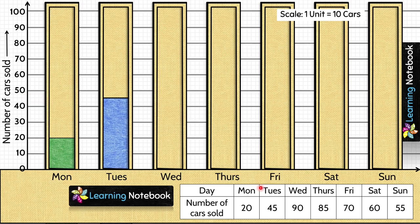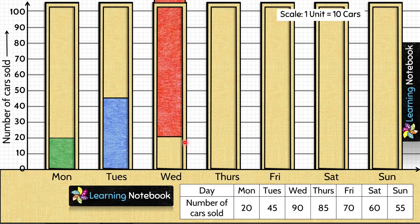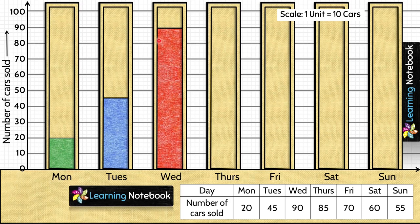Now let's take a look at number of cars sold on Wednesday. It is 90. So we are going to insert a red colored bar and adjust its height to represent 90.